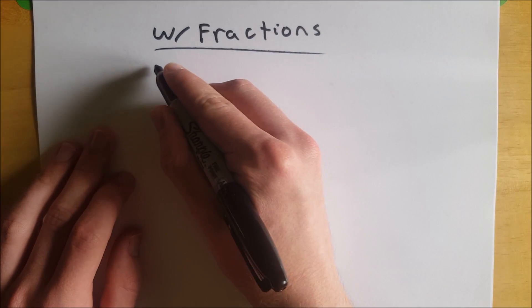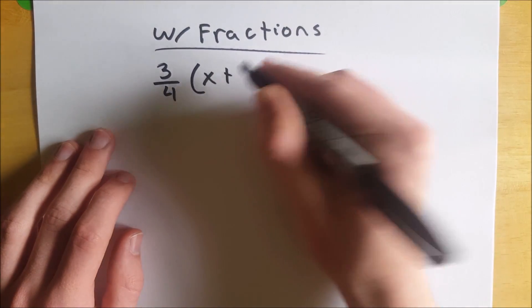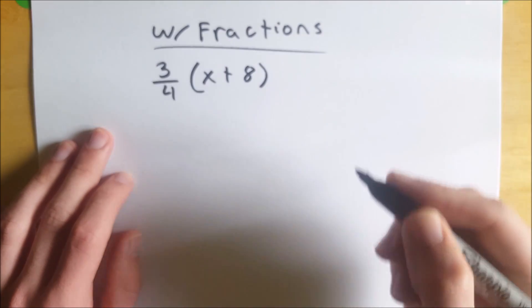So let's say we've got something like this. We've got 3/4 multiplied by, in parentheses, the hallmark of the distributive property, x plus 8.